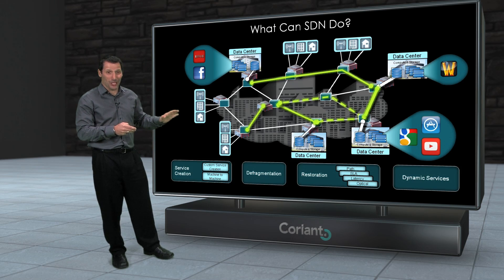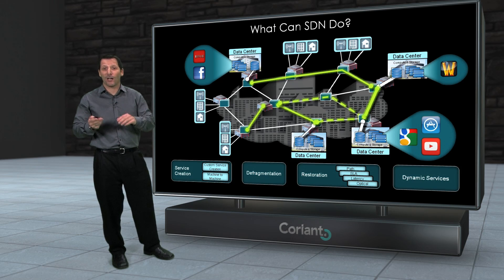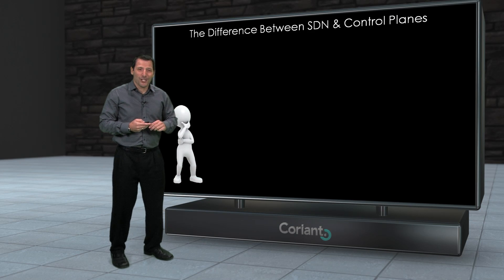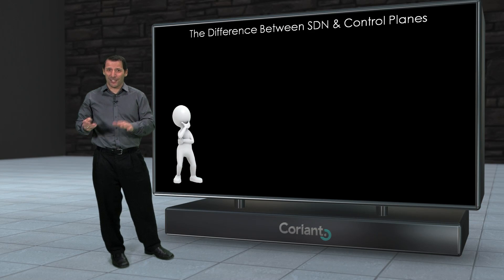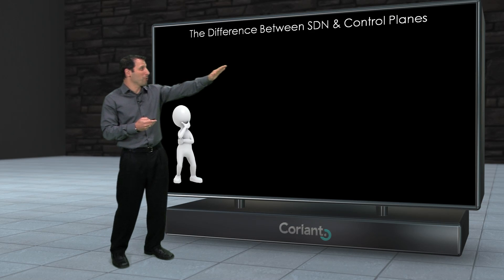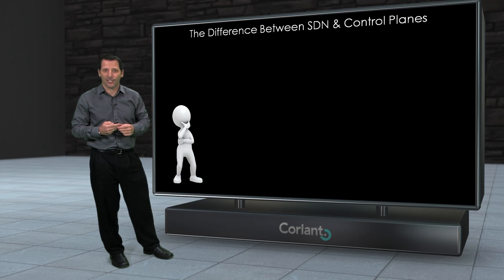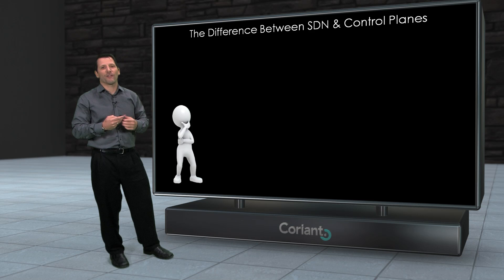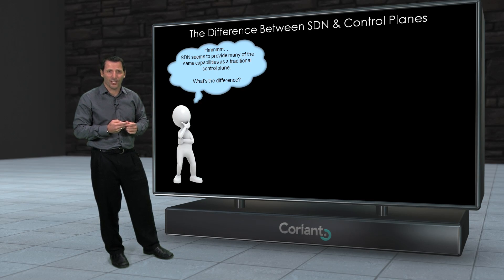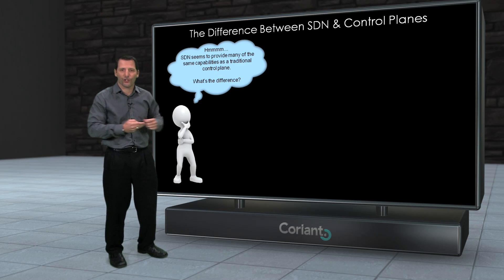Now, this is just a series of applications — potential applications that we're integrating into Coriant's Transcend SDN solution. But really, if you look at all those applications, there's nothing they're doing that you couldn't have done with a control plane. If you've been in this industry long enough, you probably remember that control planes have been around for 20 or 30 years and provide a lot of these automated capabilities. So I found myself asking: what's the difference? If a control plane could potentially do all of those capabilities, what's the difference between this newer SDN solution and a traditional control plane?